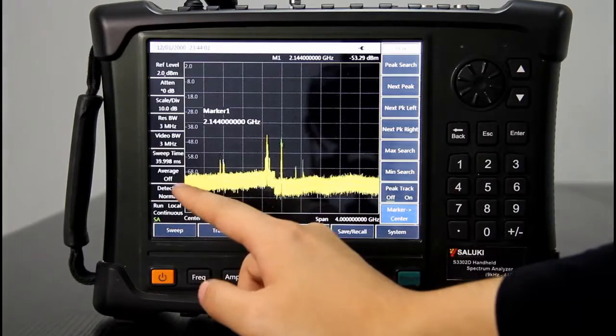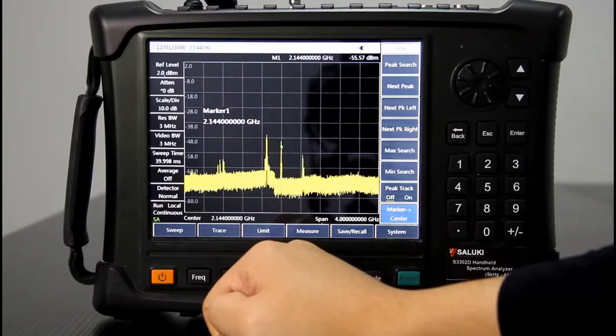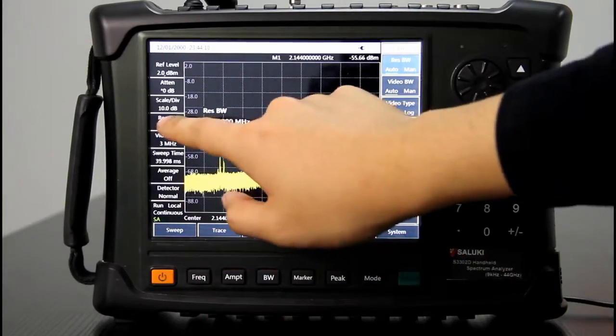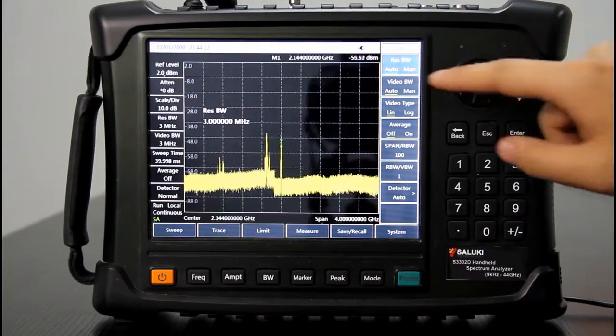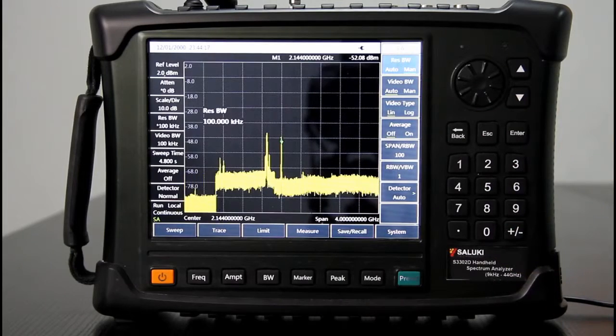Now the noise floor is around minus 70 dBm. If we want to lower the noise floor, we can lower the RBW. For example, we lower it to 100 kHz.